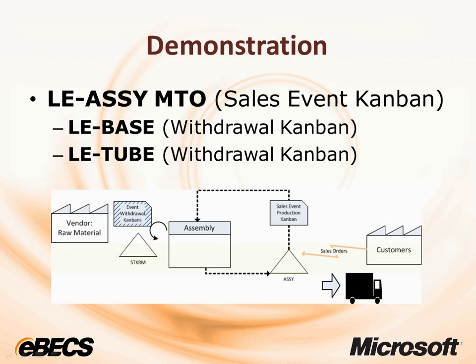This demonstration will show how simply entering a sales order for a top-level make-to-order item will trigger production on the production floor. In this case the top-level item is LE-ASSY MTO, and that item consists of parts LE-BASE and LE-2. Those component parts will be signaled using Kanban withdrawals to pull the materials to the line side.